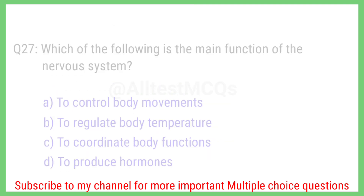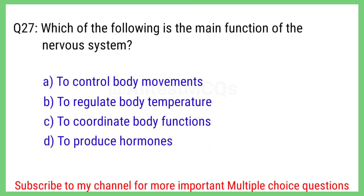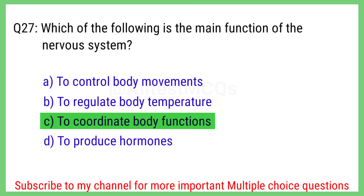Question number 27. Which of the following is the main function of the nervous system? The right answer is option C. To coordinate body functions.